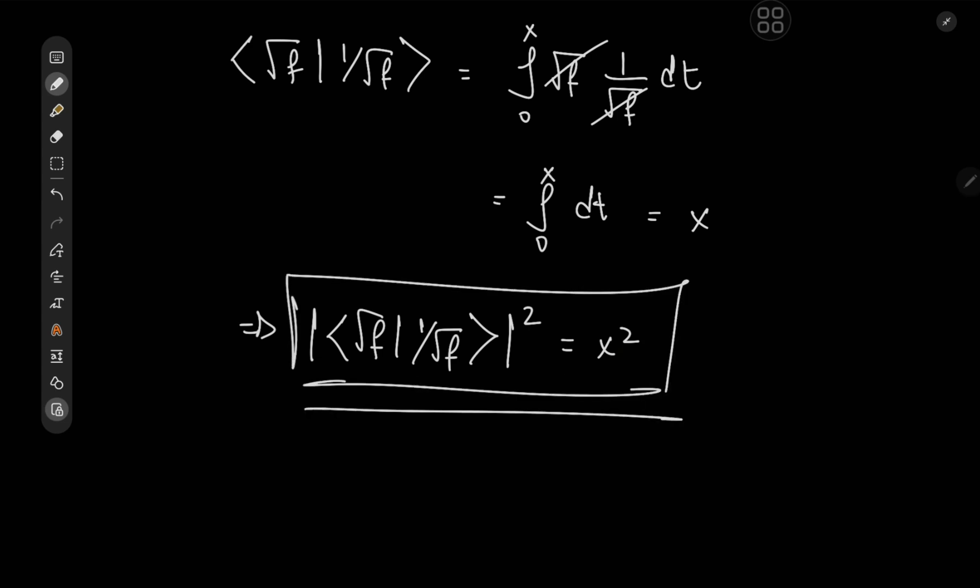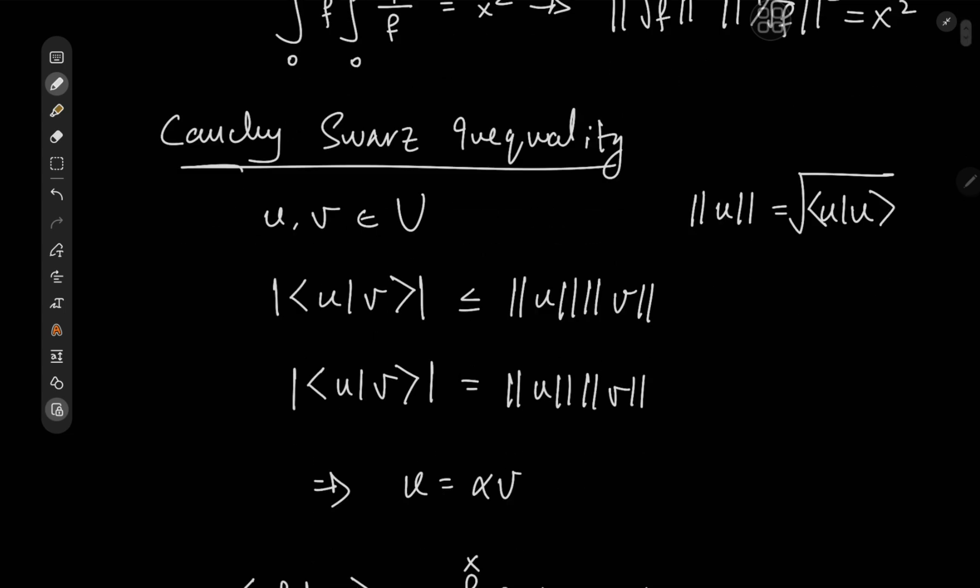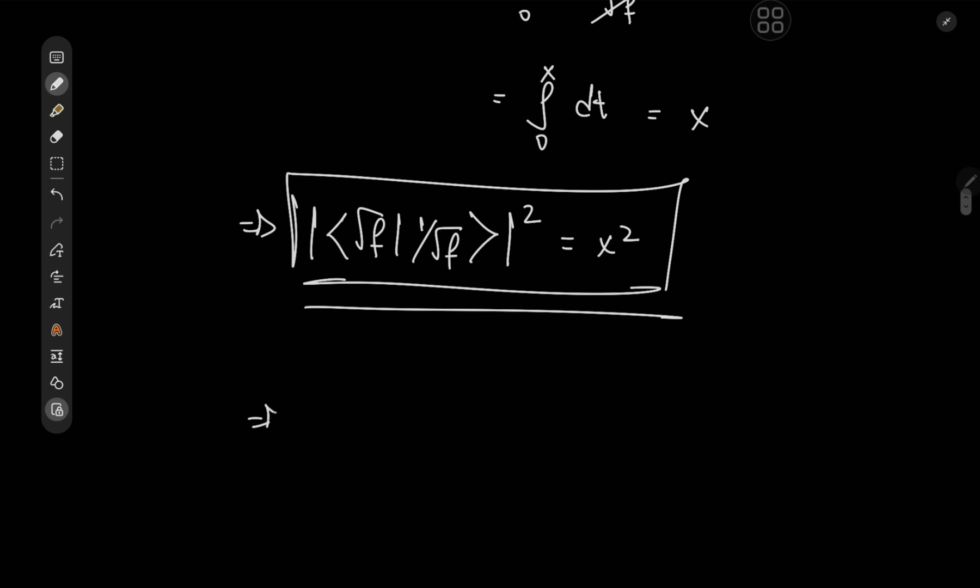If we restate our integral equation in terms of inner products or norms, then we see that this thing turns into squared norm of root f times the squared norm of 1 over root f equals x squared. So comparing our two equations, we immediately see that we have absolute value of inner product root f and 1 over root f squared equal to squared norm of one of the vectors root f times the squared norm of the other vector, that is 1 over root f.